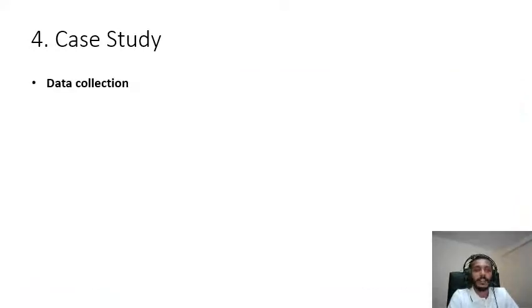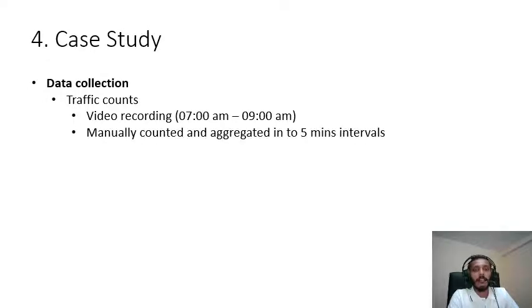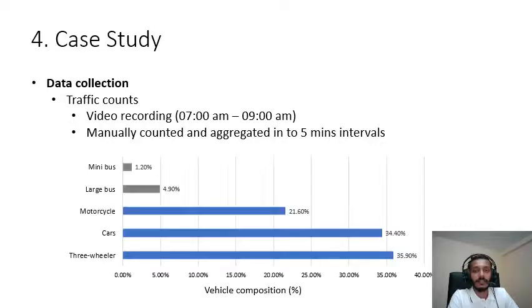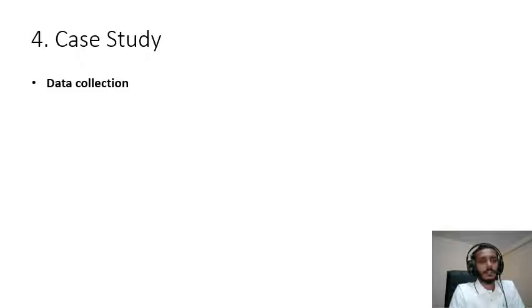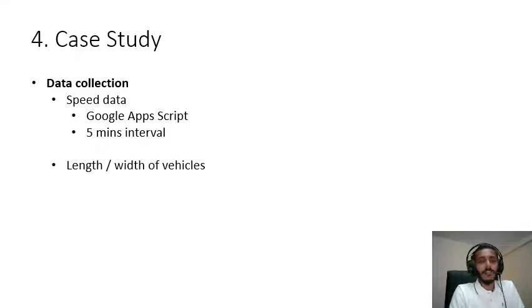In terms of data collection, for traffic counts we used video recording on location from 7 AM to 9 AM. This video was used to manually count the vehicles and then aggregated into five minute intervals based on different vehicle types. When you consider different vehicle types, we can see three wheelers, cars and motorcycles are dominating. The speed data was collected using Google app script based method in five minute intervals, and length and width of vehicles were also measured using proxy vehicles. This data was collected by colleagues who worked in the same project.